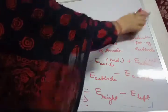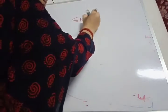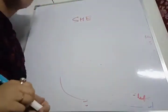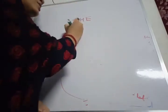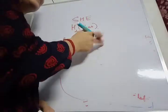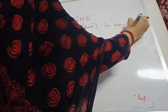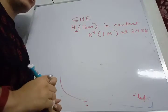Now we have the Standard Hydrogen Electrode, or SHE. When hydrogen gas at one bar pressure is absorbed on a platinum surface or platinum foil and comes in contact with H⁺ ions of one molar concentration at 298 Kelvin, this setup is known as the standard hydrogen electrode.